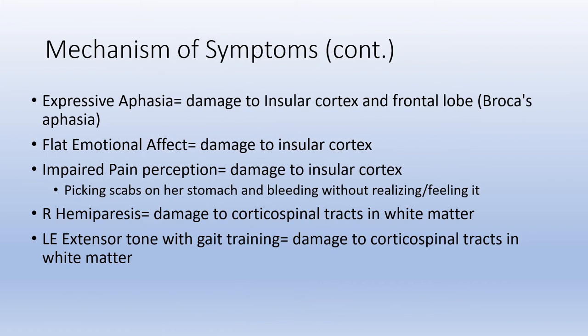Continuing with mechanisms of symptoms: her expressive aphasia is due to damage to the insular cortex and frontal lobe — this would be Broca's aphasia. The flat emotional affect is consistent with damage to the insular cortex. Impaired pain perception is also consistent with insular cortex damage. Right hemiparesis results from damage to the corticospinal tracts within the white matter. The lower extremity extensor tone during gait training is also attributable to damage to the corticospinal tracts.